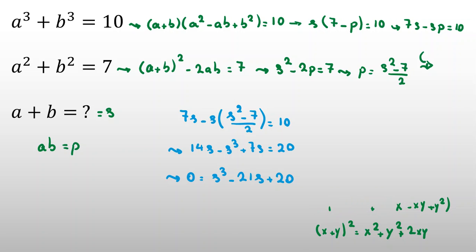Now it's a cubic equation. We should find at least one root. It's obvious that s = 1 is a root, because 1³ - 21(1) + 20 = 0. We factor from s - 1.